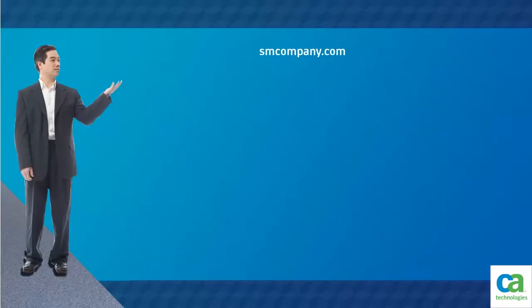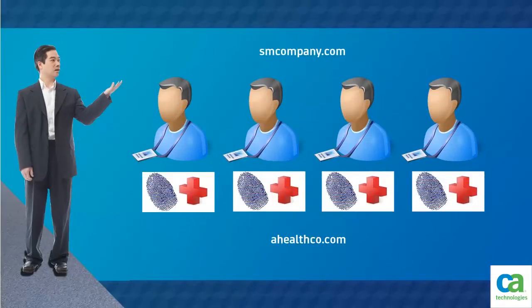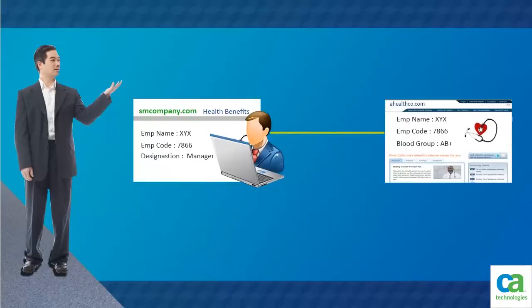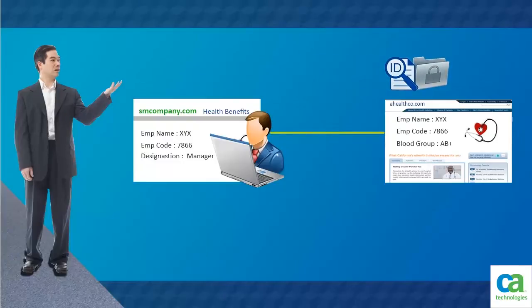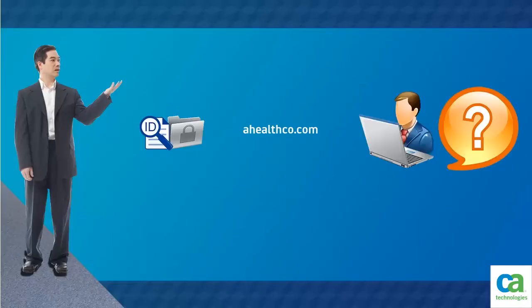In this scenario, ahealthco.com maintains all health-related information and user identities for every employee at smcompany.com. When an employee of smcompany.com accesses ahealthco.com, a SAML assertion containing the identity for the employee is passed from smcompany.com to ahealthco.com in a secure manner. This assertion allows ahealthco.com to determine who the user is and the level of access to allow for that user.